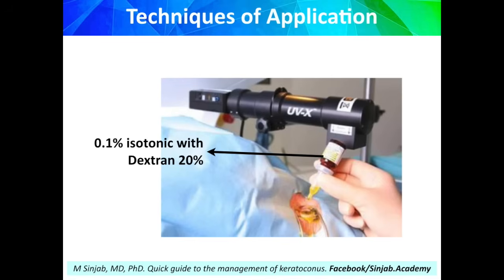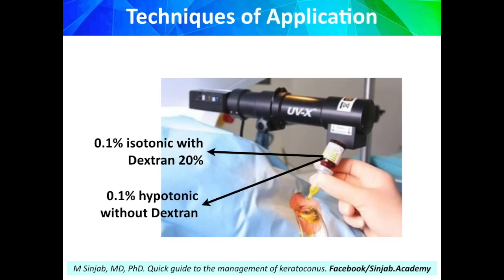There are two types of riboflavin. The first is 0.1% isotonic riboflavin with dextran 20%. The other one is 0.1% hypotonic riboflavin without dextran.